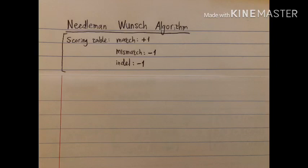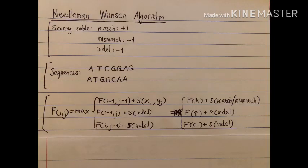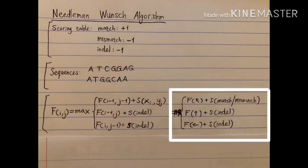So let's say that this is our scoring table and that these are our two sequences. This would be the algorithm showing the value for each cell in the table that we will build. The value in the ith row and jth column is going to be the maximum of one of three options: either the value of the cell diagonally up-left plus a match or mismatch (plus one or minus one), or the value of the cell on top plus indel, or the value of the cell to the left plus indel.